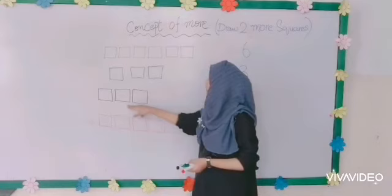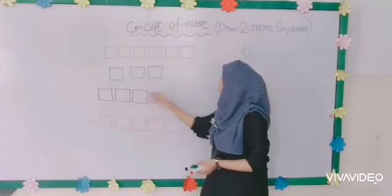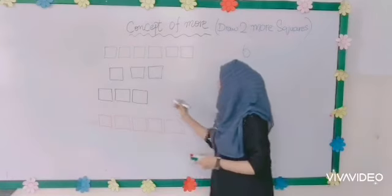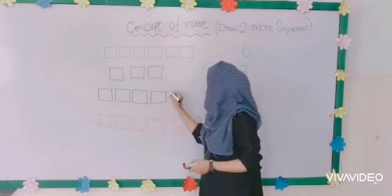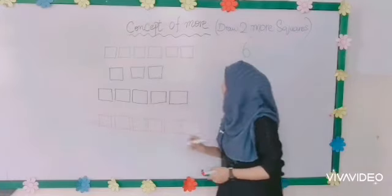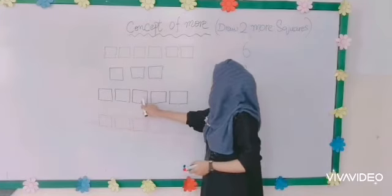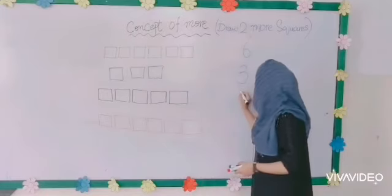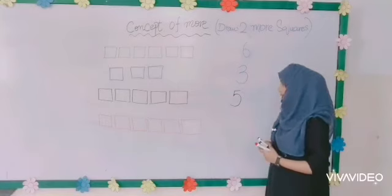Now count how many squares are here? One, two, three — three squares. I will add two more squares: one, two. Now count with me: one, two, three, four, five. अब हम यहाँ पर number five लिख देंगे।